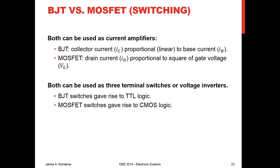We can do switching using BJT or MOSFET. In a BJT, collector current is proportional to base current. In a MOSFET, drain current is proportional to the square of the gate voltage. Either way — voltage-controlled or current-controlled — we get logic. BJTs give us transistor-transistor logic (TTL), and MOSFETs give us CMOS logic — complementary metal-oxide semiconductor logic. These are two different logic schemes, but both support all the logic gates: inverters, AND, OR, NAND, NOR, XOR, and so on. You can build them out of TTL or CMOS.